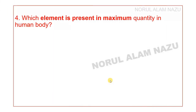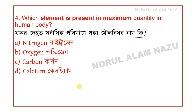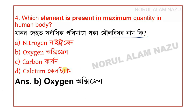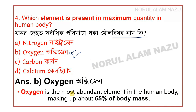Which element is present in the maximum quantity in the human body? Oxygen is the most abundant element in the human body, making up about 65% of body mass.